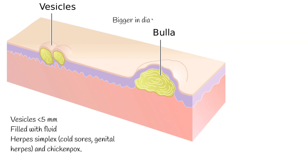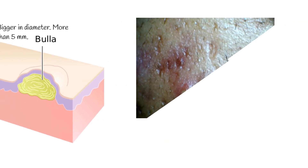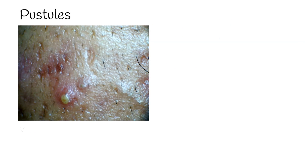Bullae look like vesicles but are bigger in diameter — more than 5 mm. Friction is one of the most common causes of bullae. Pustules are vesicles that contain purulent exudate. Acne and folliculitis are classical examples of pustule formation.